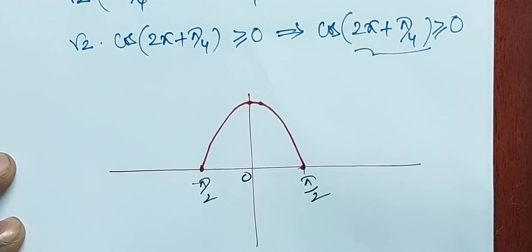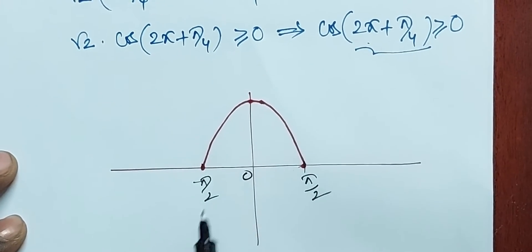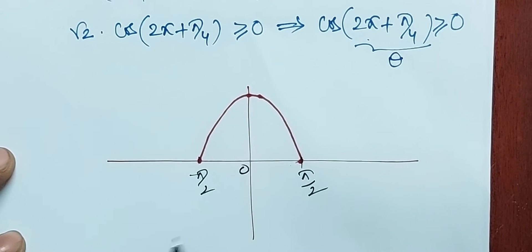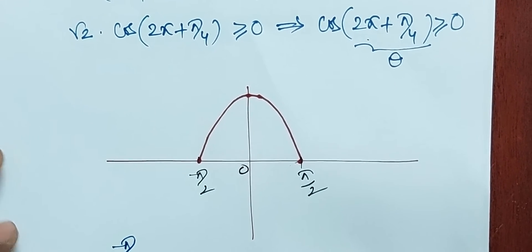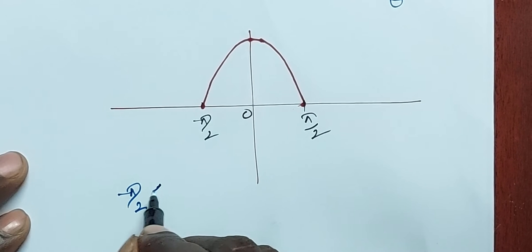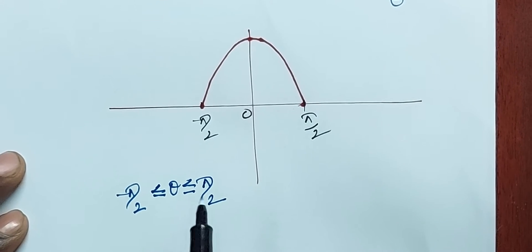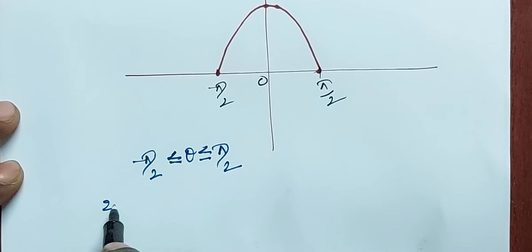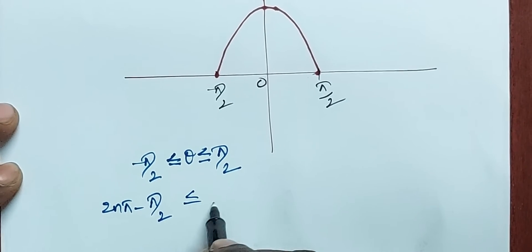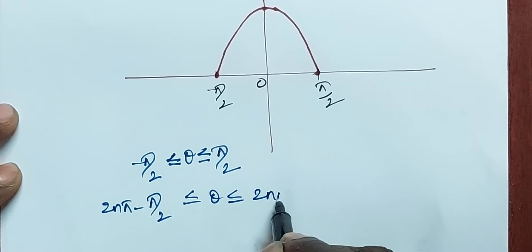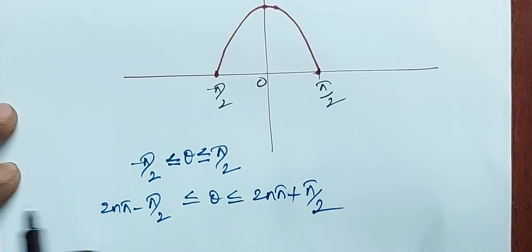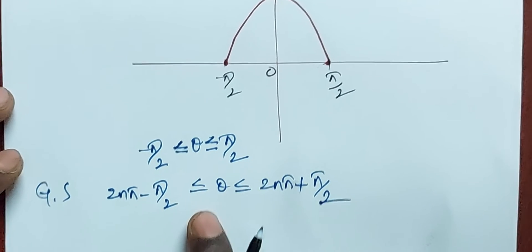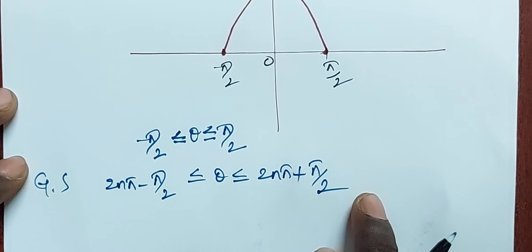So in place of θ we have 2x + π/4. First suppose θ ranges from minus π/2 to π/2. On generalizing this solution, we get 2nπ minus π/2 ≤ θ ≤ 2nπ + π/2. This is the general solution.